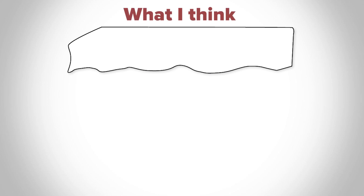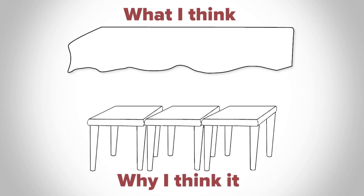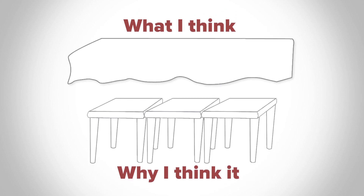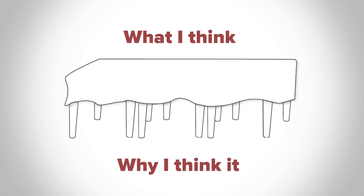After introducing the two-part organization of all persuasive writing, connect them by adding a tablecloth to the graphic organizer. The writer's claim, or what he thinks, acts like the tablecloth, draping over and unifying the reasons that follow. Then the writer explains why he thinks it via strong tabletop reasons, each supported by sturdy leg evidence.